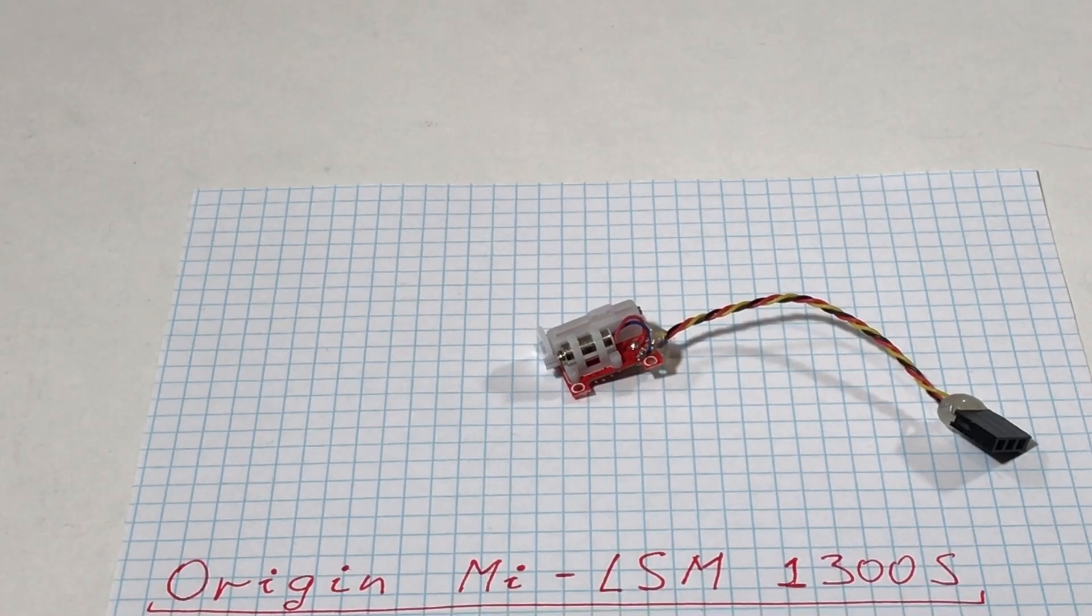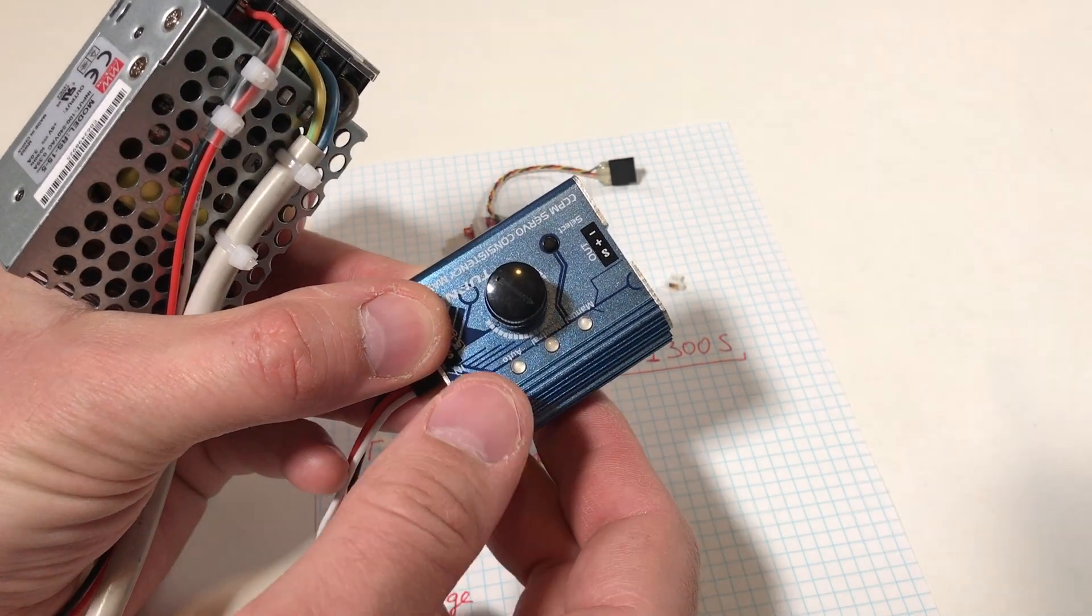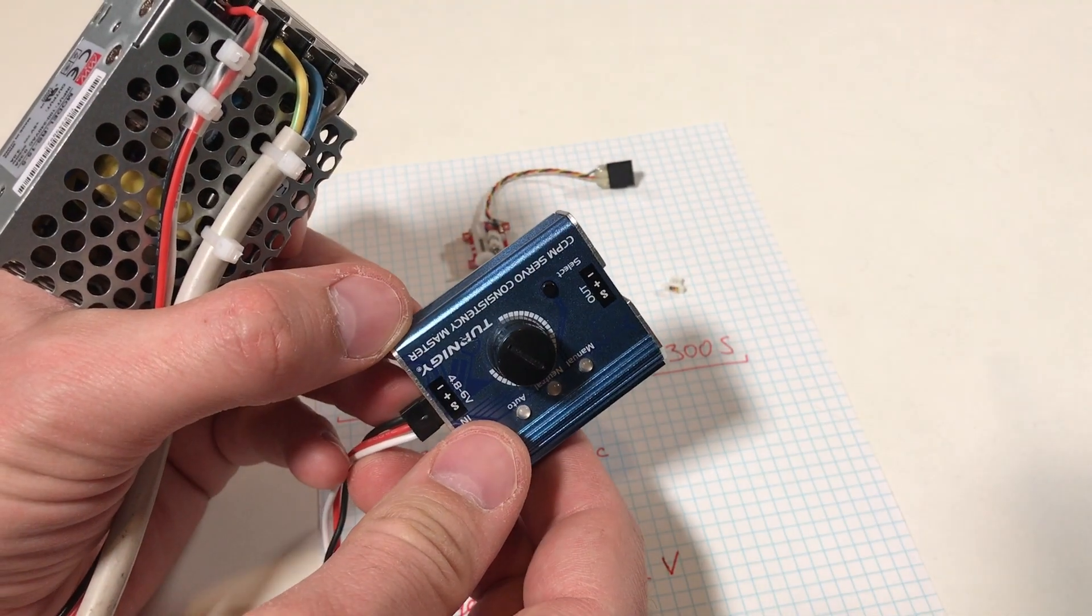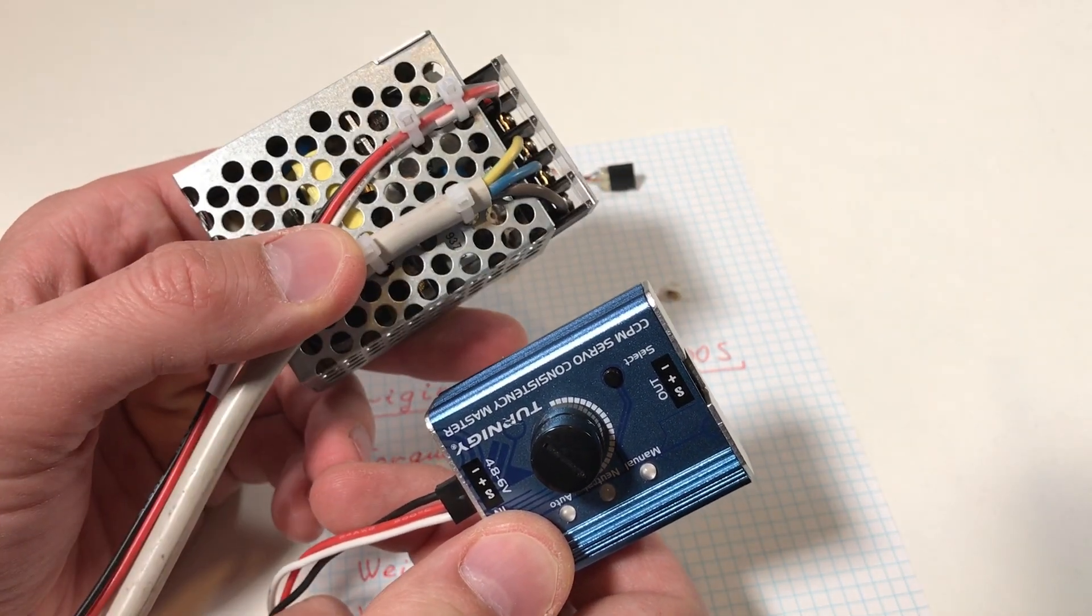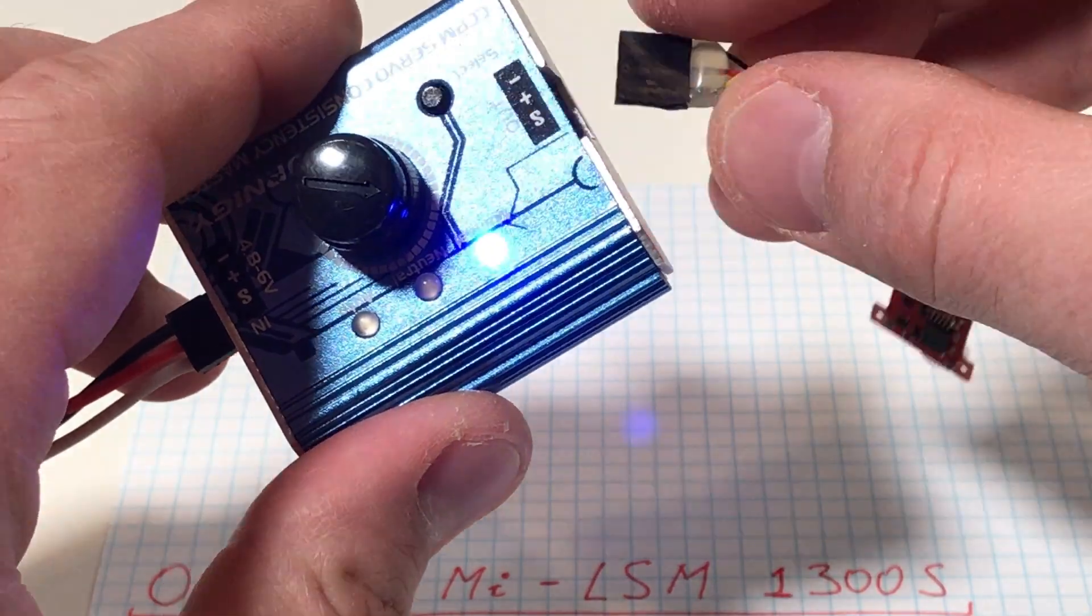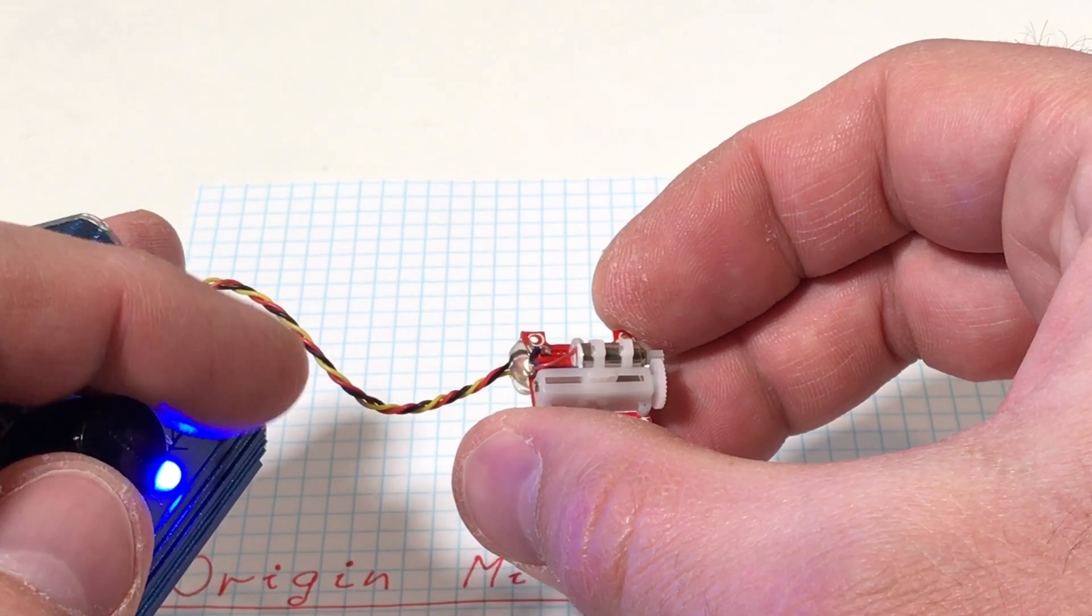Now let's see how it works. To test the servo motors, I'm going to use this servo tester and it's connected to the 5 volt power supply. It makes a little bit strange sound, but it does work.